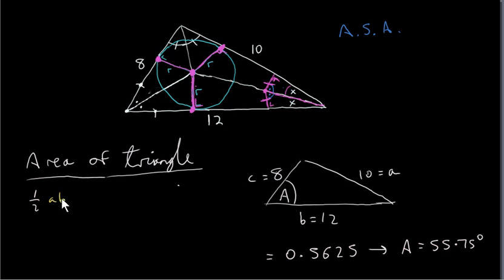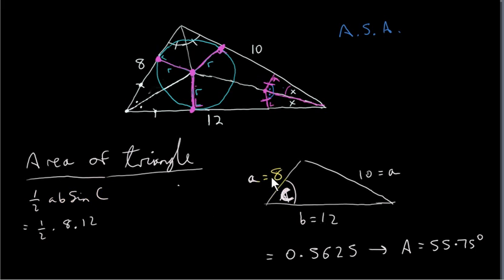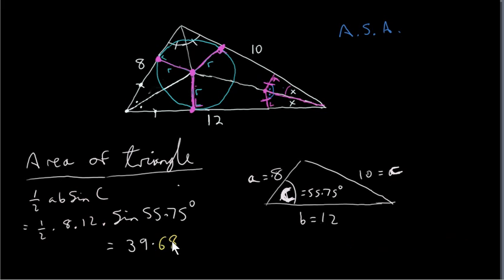So the area of the triangle is half AB sine C — that's half times 8 times 12 times sine of 55.75 degrees. Just remember in words: half the product of two sides times the sine of the angle in between. Because if little a and little b are the two sides then the angle in between has to be capital C, since capital C is opposite little c. The angle is 55.75 degrees, so the area of the triangle is 39.68.